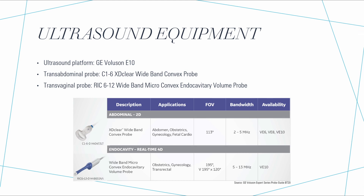All ultrasound footage in this series was captured on a GE Voluson E10 machine. Where transabdominal probes were used, a C1-6XD convex probe was used. Transvaginal images were obtained with a RIC 6-12 transvaginal probe.